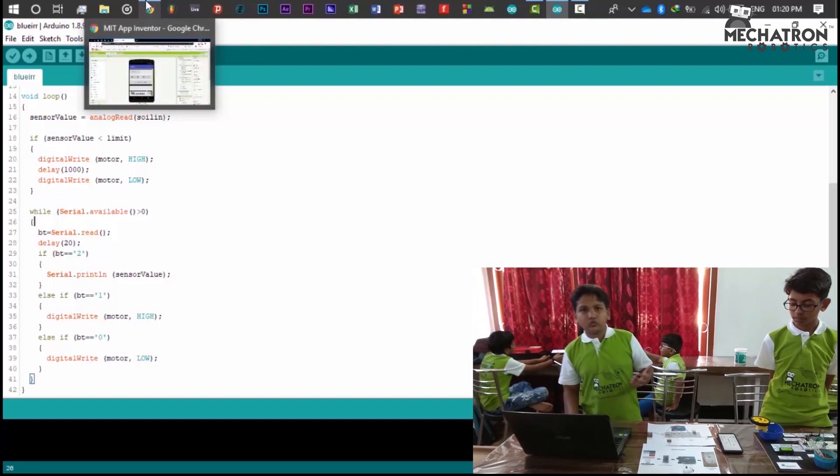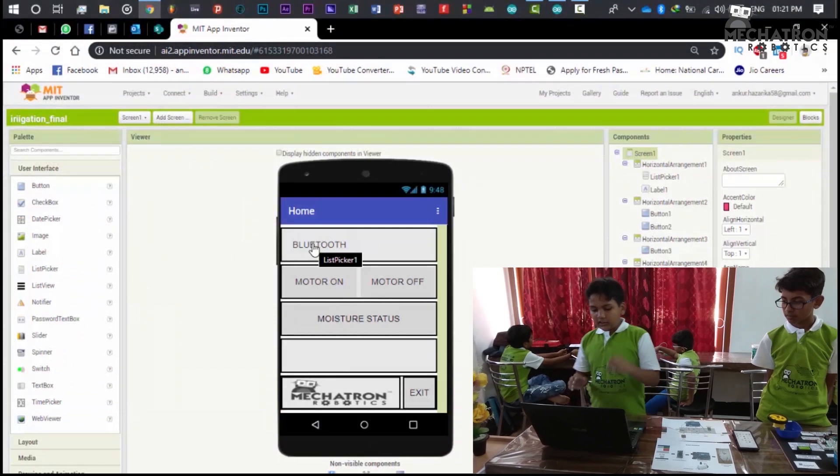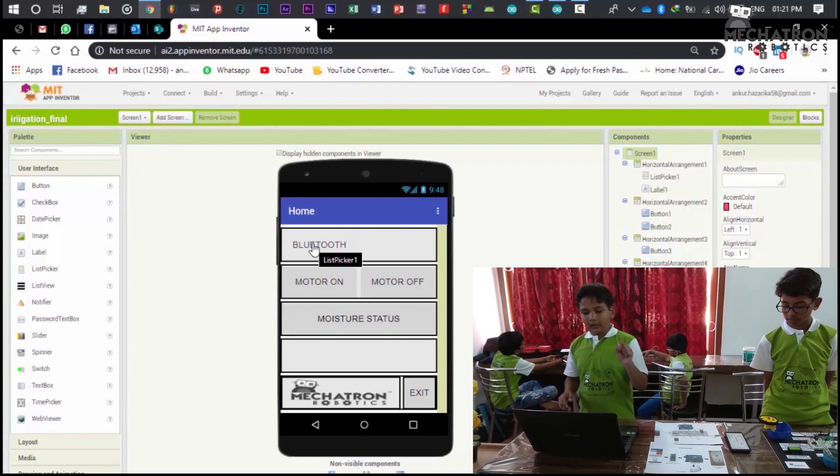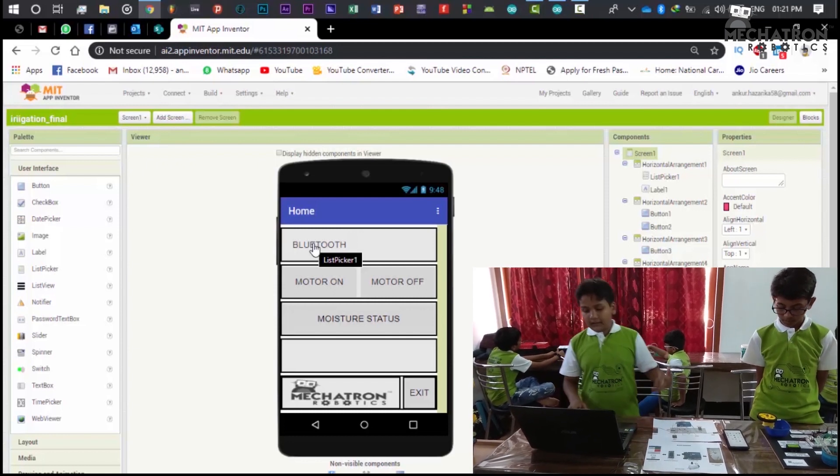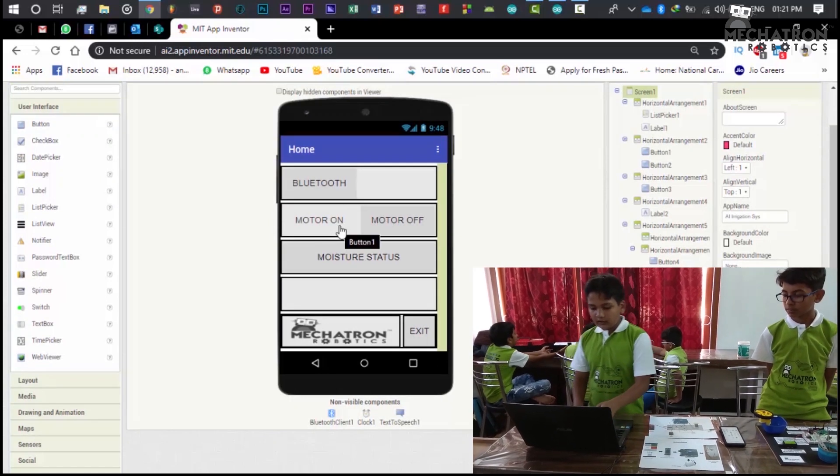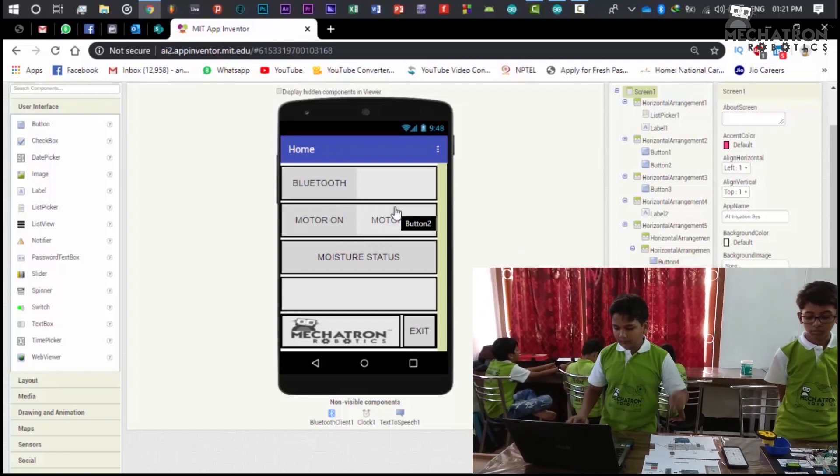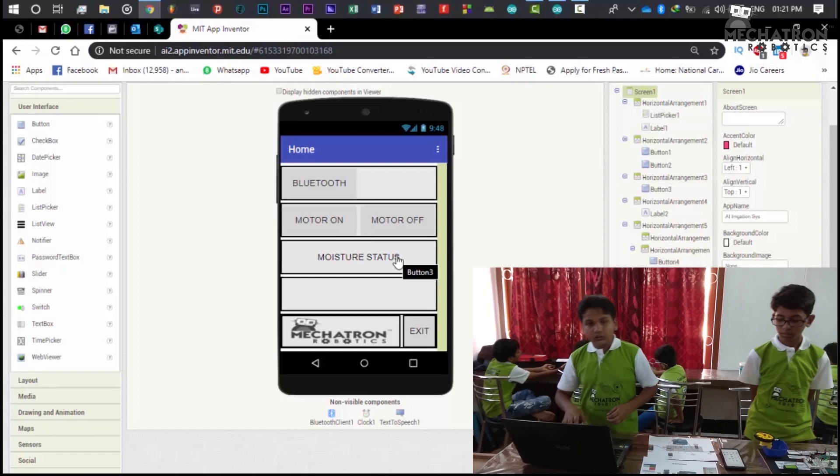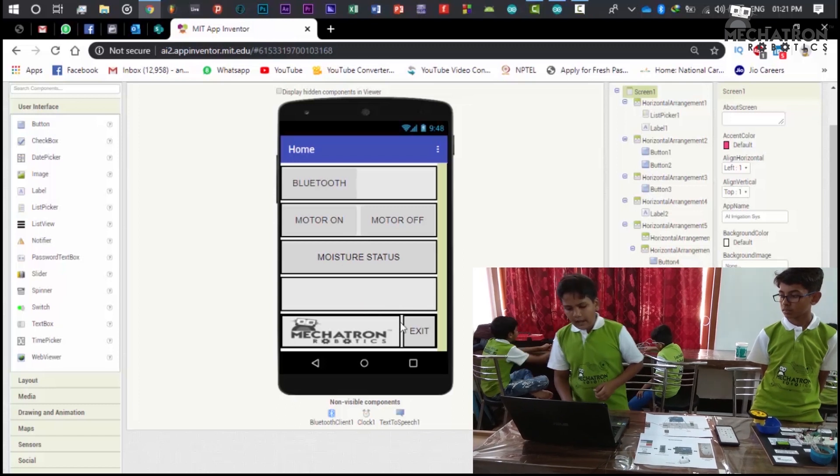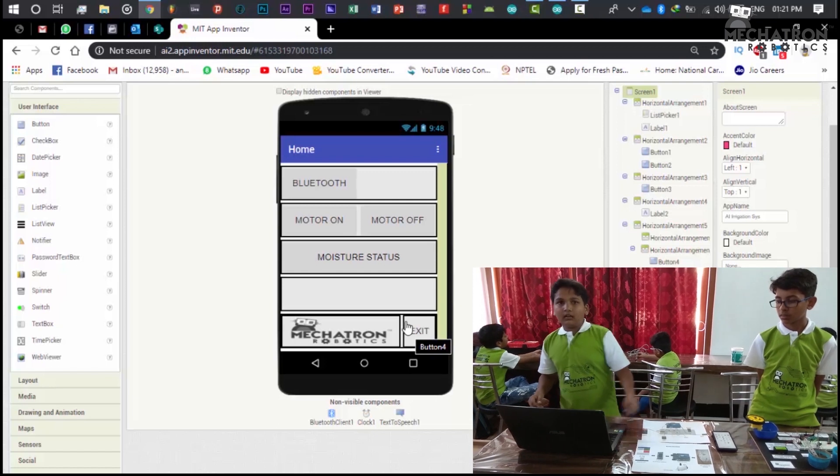Now I am going to show the app part. This is the Bluetooth. List picker means it will show the list of Bluetooth devices, and we have to pick one. And if the Bluetooth is on, it will be connected. This is the motor button. If we click on motor on button, the water will be pumped. If we click on the motor off button, the water will not pump. If we click on the moisture status, it will show the moisture status here. And we have also put the exit button. If we click on the exit button, it will close the app.